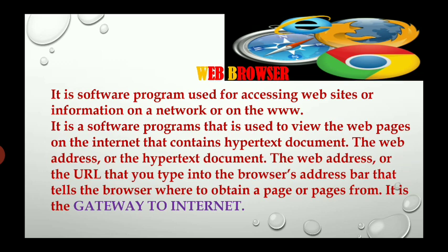What is a web browser? It is a software program used for accessing websites or information on a network or on the WWW - that is the World Wide Web. It is used to view web pages on the internet that contain hypertext documents. The web address or URL that you type in the browser's address bar tells the browser where to obtain a page from.